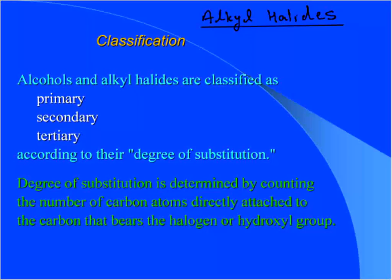While this topic is on alkyl halides, this type of classification is common for alcohols and alkyl halides both — primary, secondary, and tertiary — which is dependent on the degree of substitution. Degree of substitution is determined by counting the number of carbon atoms directly attached to the carbon that bears the halogen group in case of alkyl halides and hydroxyl group in case of alcohol.